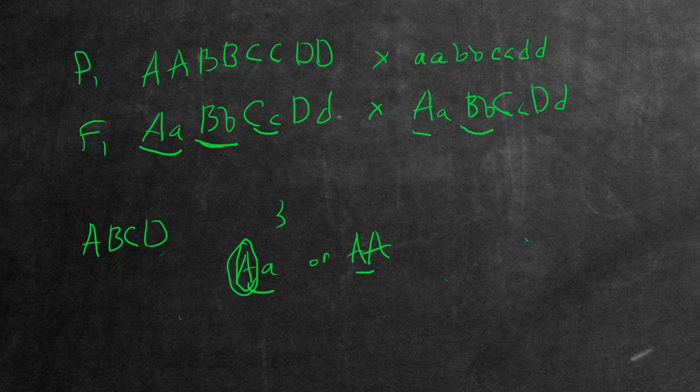The question is asking what proportion of the F2 are going to be having this type of phenotype? To save myself the effort of making a Punnett square, I know that there's a three to one ratio of expression of phenotype whenever you cross two heterozygous individuals like this.